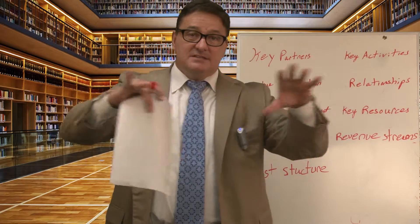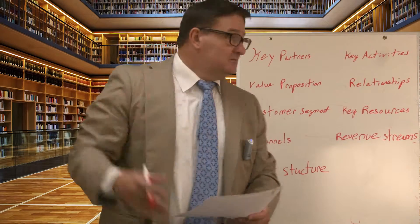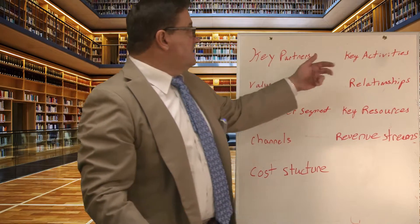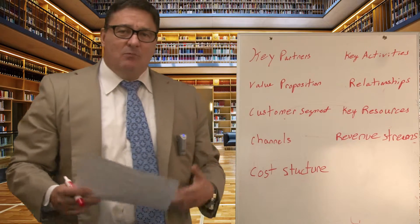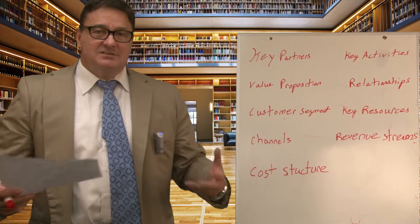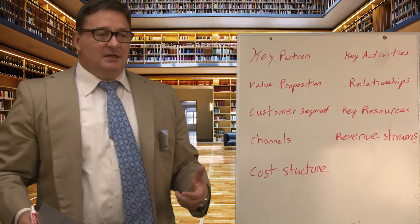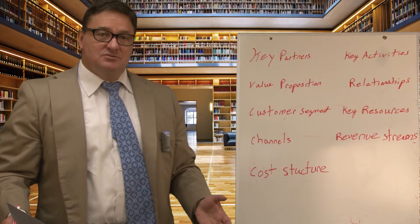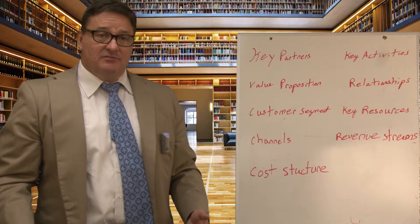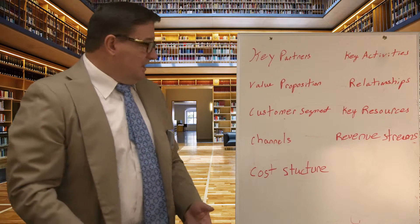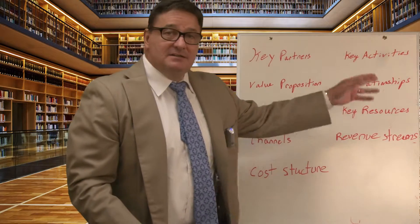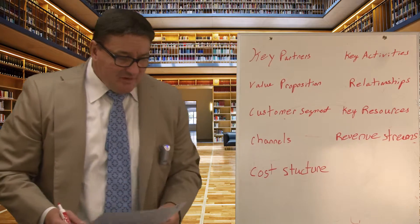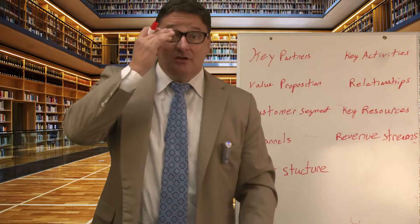After we line these up on a canvas, we would write down who their key partners are and what their key activities are. When we go through this exercise, it's a great way for us to understand the story of the company, to understand the narrative of the company. This is basically a company in a nutshell. I'm going to go through a quick example here.